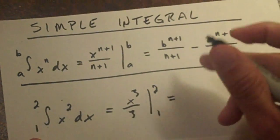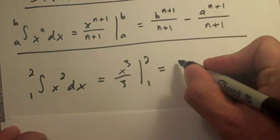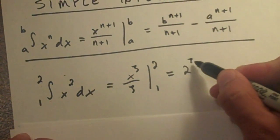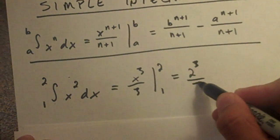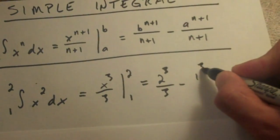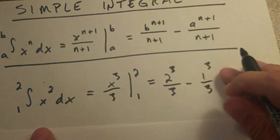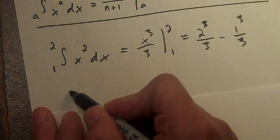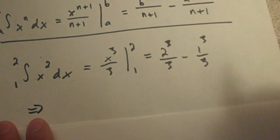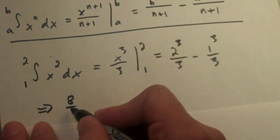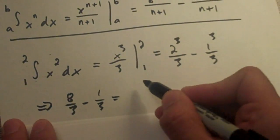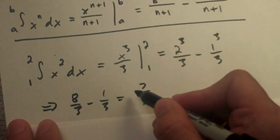And then over here our b which is 2, so we'll put 2 to the n plus 1 which is 3, all over 3, minus our a which is 1, n plus 1, 3 over 3. And we can simplify this further. So 2 to the third power is 2 times 4 is 8. So 8 over 3 minus 1 over 3 which is 7 over 3. And that's your final answer.